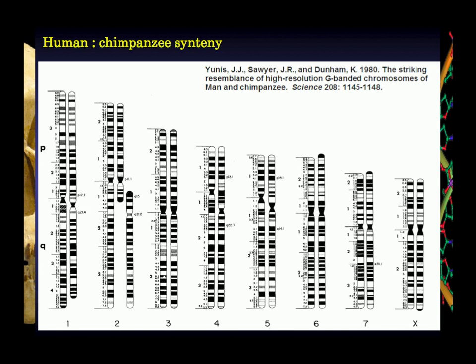Dyes are differentially picked up by different sequences along the chromosome, so it becomes a convenient way just to look at a whole-scale view of an entire chromosome and say, how do these patterns compare from one species to another? This was done back in the 1980s, so this is quite old data. This has been known for quite some time.